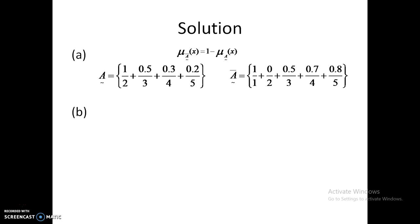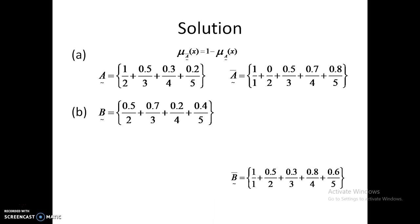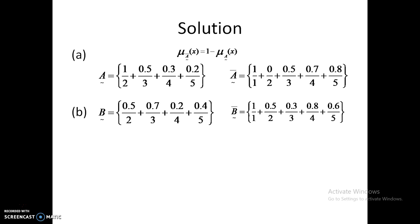Coming to B bar: at point 1, the membership value of B is 0, so B-bar at 1 is 1. At 2, B is 0.5, so 1 minus 0.5 is 0.5. At 3, 1 minus 0.7 is 0.3. At 4, 1 minus 0.2 is 0.8. At 5, 1 minus 0.4 is 0.6. So according to one formula — mu A-bar of x equals 1 minus mu A of x — we have finished both complement operations.